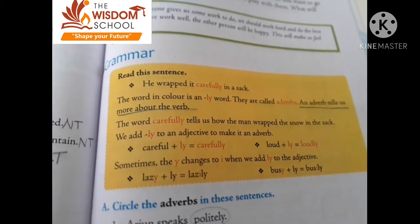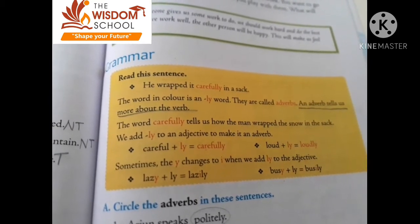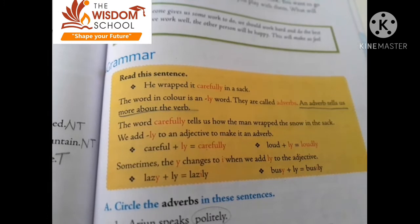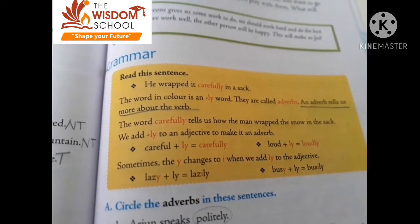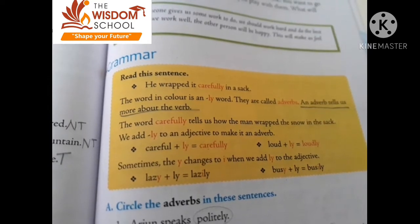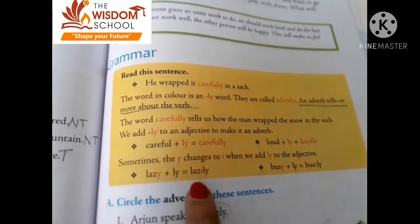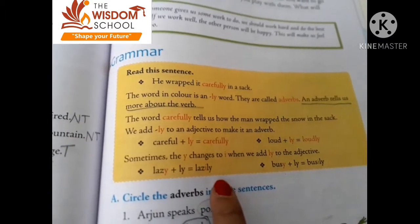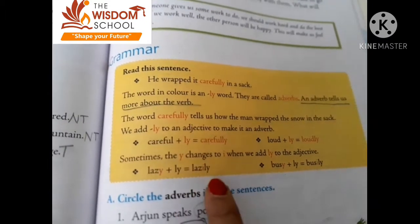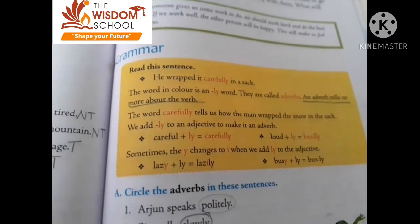For example: careful plus -ly makes carefully. Loud plus -ly makes loudly. Sometimes the -y changes to -i when we add -ly to the adjective. Jab hum adjective mein -ly lagaayenge, toh -y, -i mein convert ho jayega — like lazily, busily. Like this you will do the adverb.